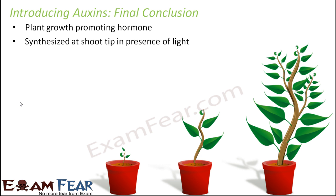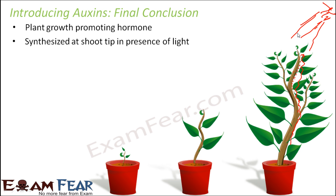Now you might ask what happens when the sun is at the side. When sunlight is coming from one side, some part of the plant is actually receiving more sunlight. So more auxins are synthesized on that side, meaning the concentration of auxin is higher on one side and lower on the other. So growth is more on one side and as a result, bending takes place. That is how phototropism comes into picture — auxin plays a very important role in the phenomenon of phototropism.